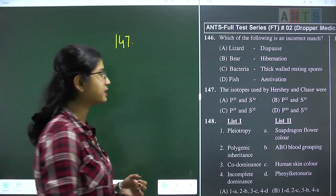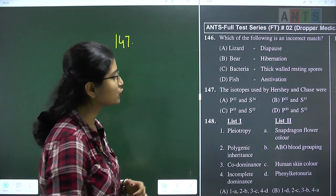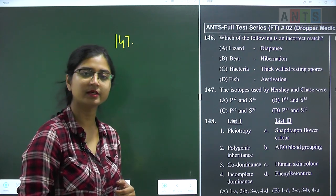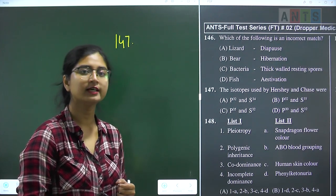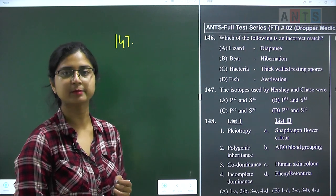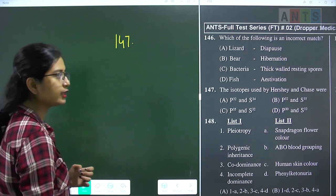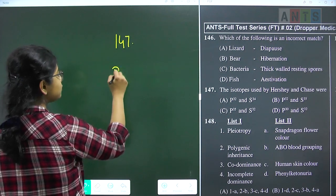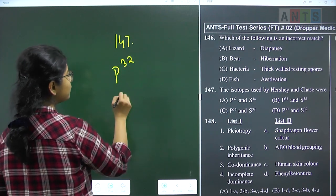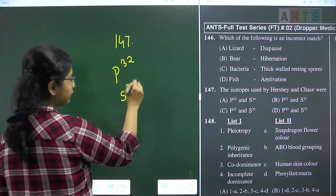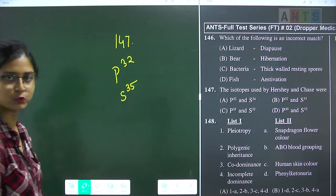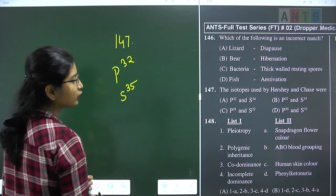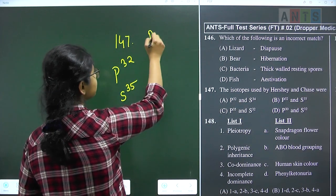Question 147: the isotopes used by Hershey and Chase, whose experiment gave the final proof that DNA is the genetic material. They used two radioactive isotopes: P-32 and S-35. Question 147 answer is option B.